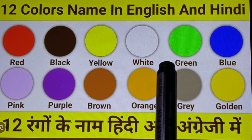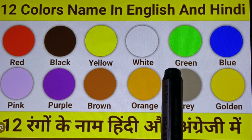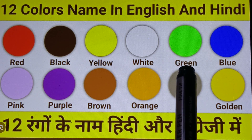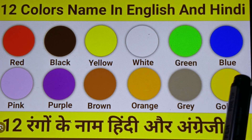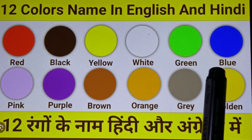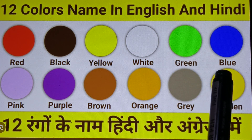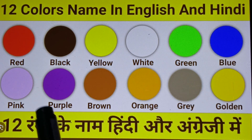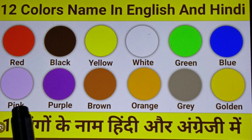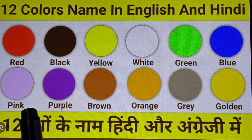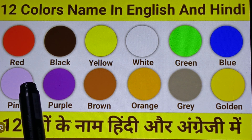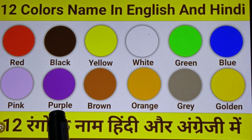Next one is Green, G-R-E-N — Green means Hara. Next one is Blue, B-L-U-E — Blue means Neela. Next one is Pink, P-I-N-K — Pink means Gulabi. Next one is Purple, P-U-R-P-L-E.